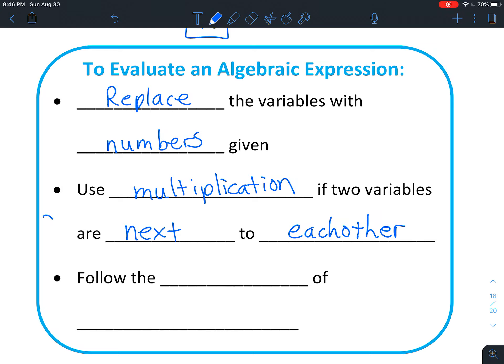For instance, if you had x and y right next to each other, once they get replaced with numbers, you would know that's 2 times 3. You wouldn't want to think of it as 23.